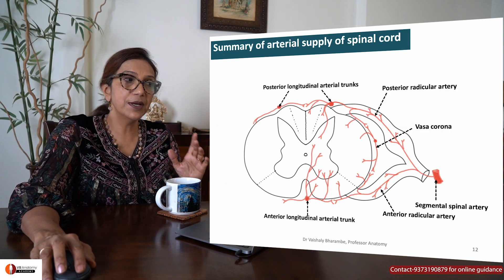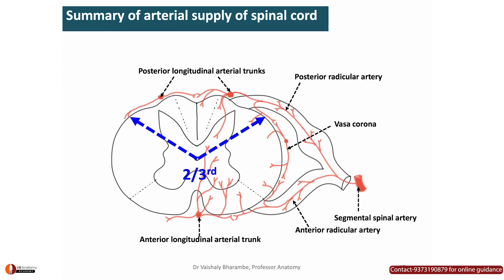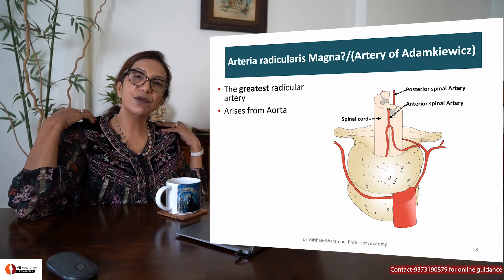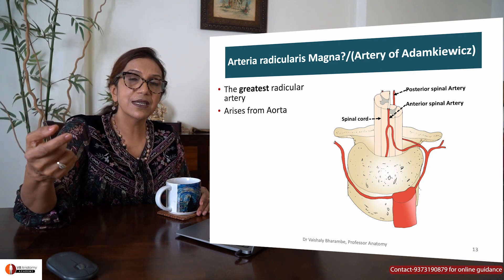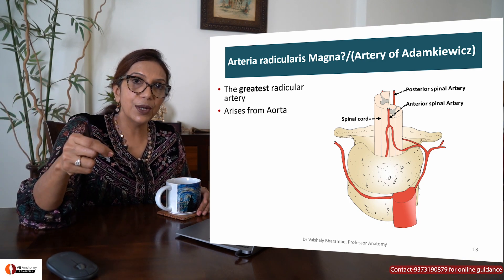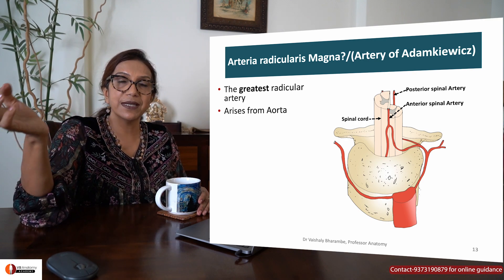To summarize: the anterior two-thirds of the spinal cord receives blood supply from the anterior longitudinal arterial trunk, and the posterior one-third receives blood supply from the posterior longitudinal arterial trunks. Both individually receive additional supply from anterior and posterior radicular arteries, which are branches of the segmental spinal arteries.